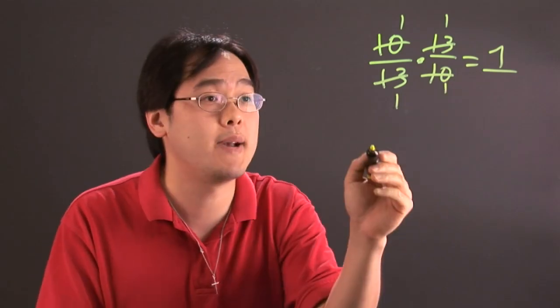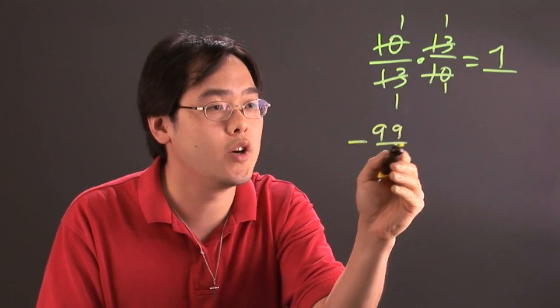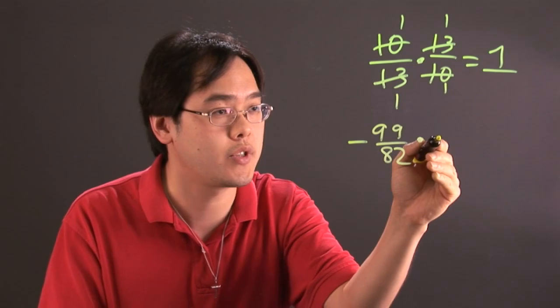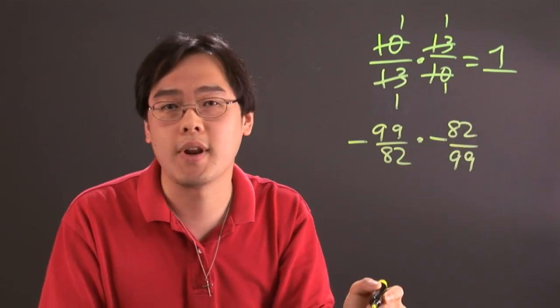Now let's do another quick example. If you have negative 99 over 82 and you want to multiply by its reciprocal, which is going to be negative 82 over 99, let's see what happens.